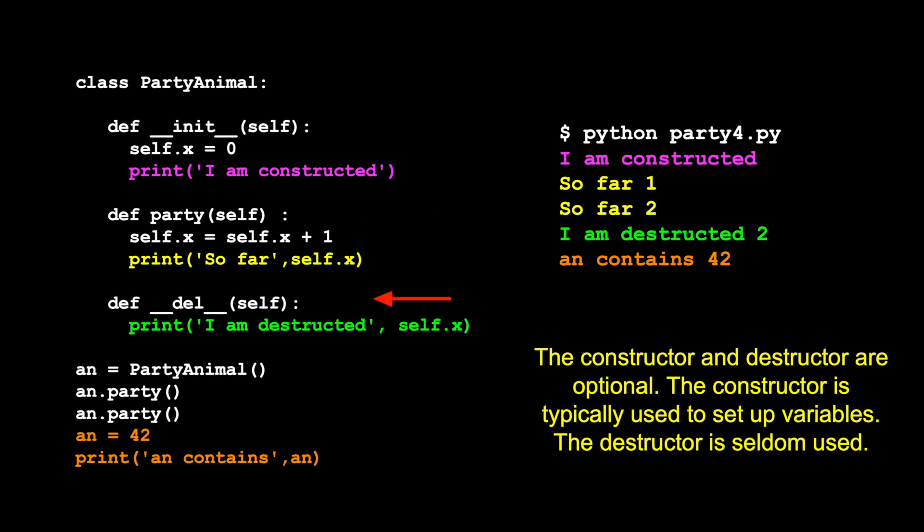And now we have __del__, and then we pass in self. And then we'll just print out that we're being destructed and what the current value of x is for that particular instance.